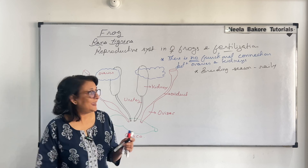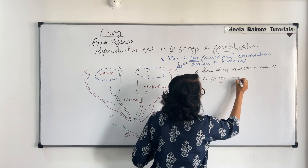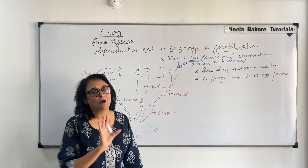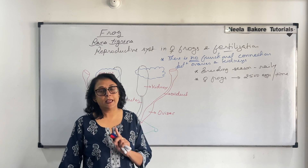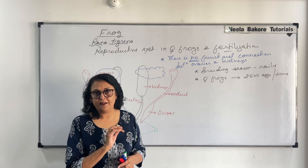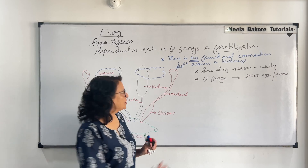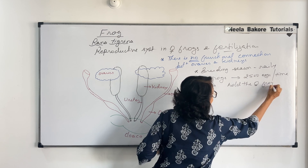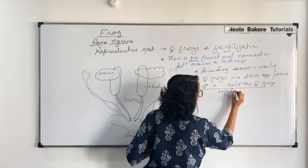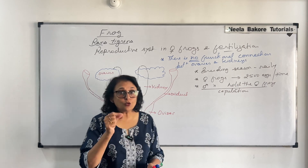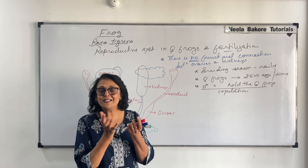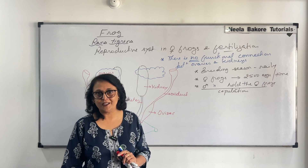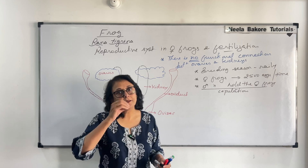Female frogs lay around 2000 to 2500 eggs each time. The eggs are released in water enclosed in a jelly-like material so that all the eggs are held together. During copulation, the male frog holds the female frog. As soon as the eggs are released, the sperms need to be released onto the eggs immediately, because after some time the jelly becomes semi-solid and sperms will not be able to move through it.